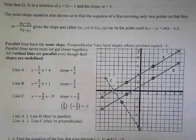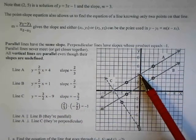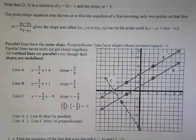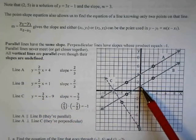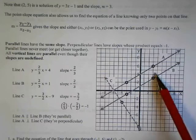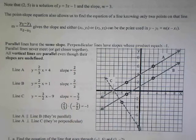Here we have a couple of examples. Line A has two-thirds x plus four, so it went through four and then up two, over three repeatedly. Line B is two-thirds x plus one, so it crossed at one but also has that same slope — up two, over three. Anytime two lines in the same plane have the same slope, they are parallel.